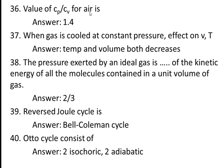Thirty-sixth question: the value of cp/cv for air is 1.4. Air is predominantly a diatomic gas, so the value is 1.4. For a monatomic gas, the value of the adiabatic index (gamma) will be 1.66. cp/cv is nothing but the adiabatic index, denoted by gamma.